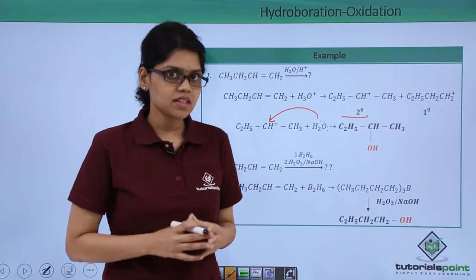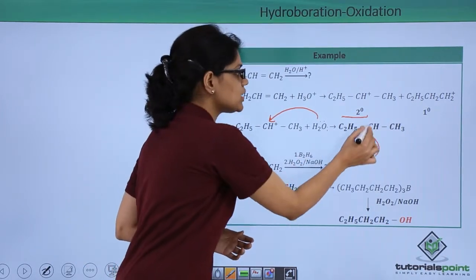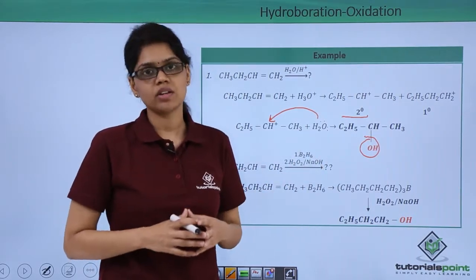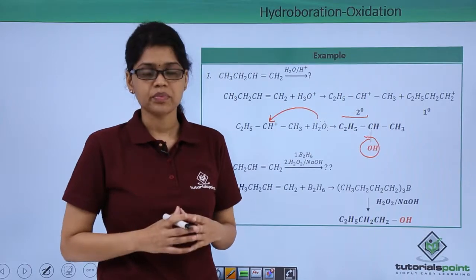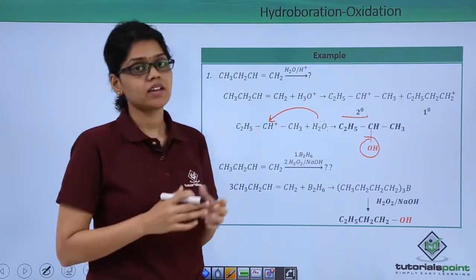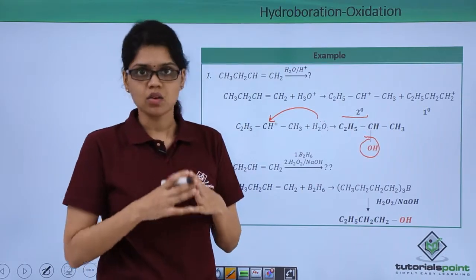Now, here you can see that OH group has attached to that particular carbon atom which has less number of hydrogen atoms, or which is in accordance with Markovnikov addition. Now, let us see what will be the product obtained when the same alkene undergoes hydroboration and oxidation reaction.